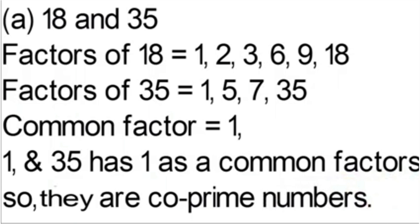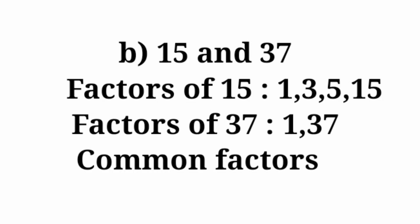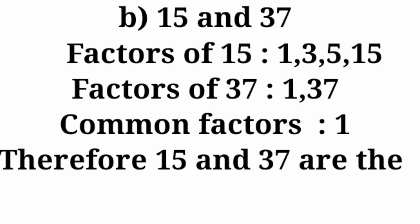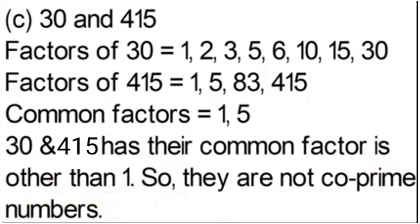Part B: 15 and 37. Factors of 15: 1, 3, 5, 15. Factors of 37: 1 and 37 only (37 is prime). Only 1 is common, so 15 and 37 are co-prime numbers.